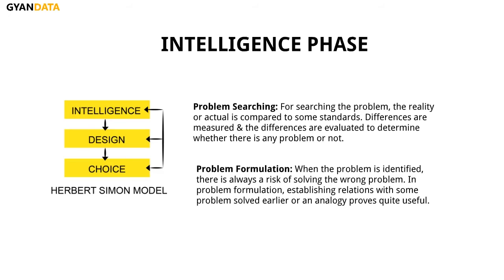The first stage deals with the complete understanding of the stimulus that triggered this process, whether a problem or opportunity. The intelligent phase of the decision making process involves problem searching, where the actual reality is compared to some standard. Differences are measured and evaluated to determine whether there is any problem or not. When a problem is identified, there is always a risk of solving the wrong problem.